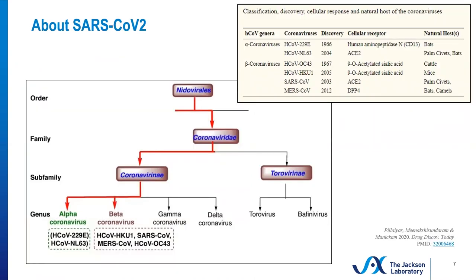The coronaviridae family is divided into four genera. The alpha and beta coronavirus groups have bats as an important host, and they're also implicated in human infections. In general, coronavirus pathology is usually associated with respiratory disease. A few common types of coronaviruses cause 20 to 40 percent of colds that circulate every year in human populations. The coronaviruses can also cause hepatic, neurologic, and other organ system pathology, either directly or indirectly.